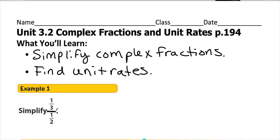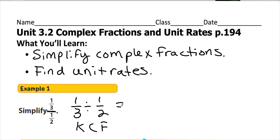So this really means 1 third divided by 1 half. To divide fractions, we use keep, change, flip. So we keep 1 third, change the division sign to multiplication, and flip 1 half to get 2 over 1. From there you can cross-cancel or reduce if needed, then multiply across the top and bottom.